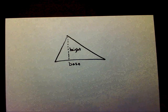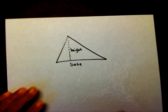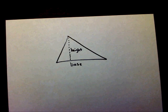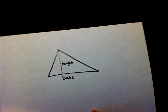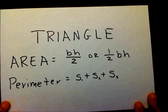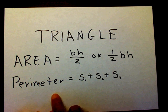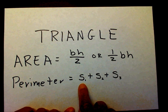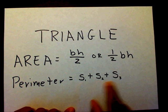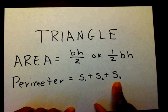However, today we're just going to talk about how to deal with the three sides. In order to find the perimeter of a triangle, we're going to add our sides: side one, side two, and side three.